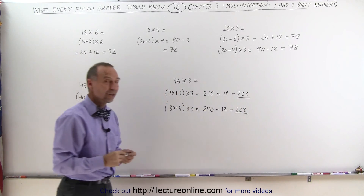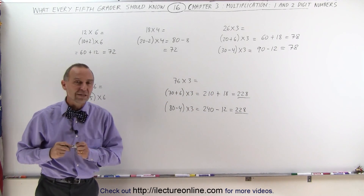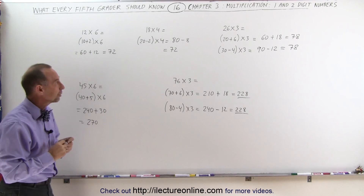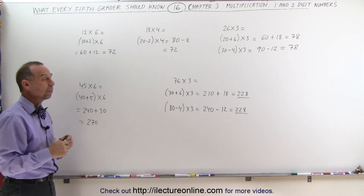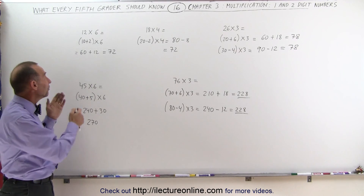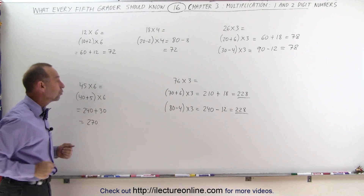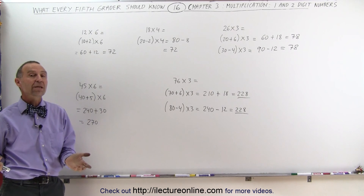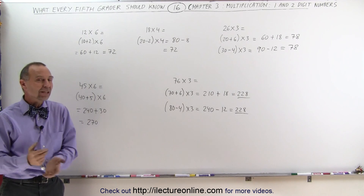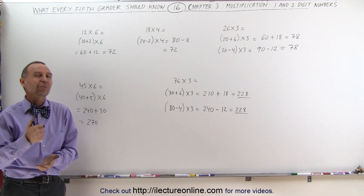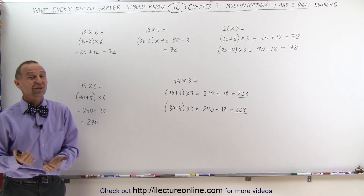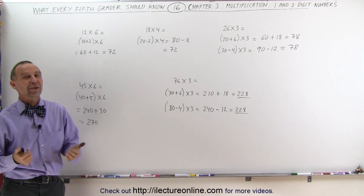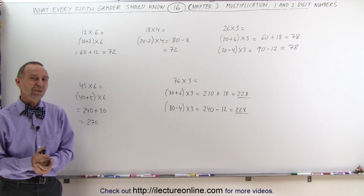Again, notice how easy it can be to multiply a two-digit number times a one-digit number if you use one of those two tricks. And that's how it makes the work a lot easier when we try to multiply a single-digit number with a two-digit number.